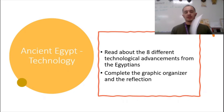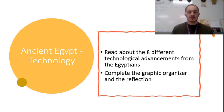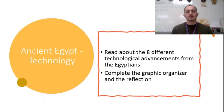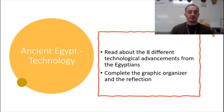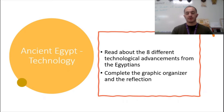Today we are going to be looking at a number of different technological advancements. There are about seven different technological advancements that we are going to look at, and you're going to pick five. You're going to write down some observations about the technological advancement and then some notes. I want to know when it was or where it came from, what it is and how they made it, used it, and discovered it. And then I want you to add a drawing of it.